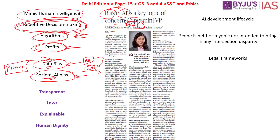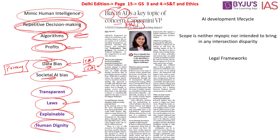This brings us to the topic of ethics in artificial intelligence. Ethics in AI means that whenever data is collected, it has to be transparent — where it is used, for what purpose, who is responsible and accountable must be provided. At the same time, the data must be consistent with the law. When data is sent to another organization, why it is being sent should be explained, and it should not harm the human dignity of the individual. If any of these parameters are violated, the ethics of AI are being violated.